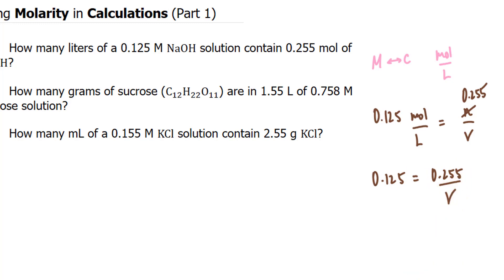All I have to do now is solve for V and I'm done. This requires a little bit of algebra. What we do is multiply both sides by V, that cancels it out on the right side. And what you do on the right side, you have to do on the other side. So V times 0.125 is equal to 0.255. Now dividing both sides by 0.125 gives us our volume in liters.